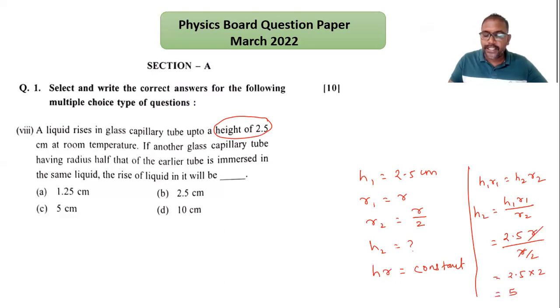So h2 is 5 cm, and 5 cm is written in option C. The answer is option C, 5 cm. When you are writing the answer, write down the option letter also with the answer.